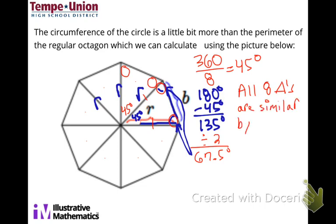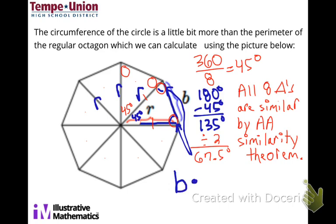The triangles are similar by the AA similarity theorem — two matching angles are enough to establish similarity. Because all eight triangles are similar, we can compare their side lengths. The side b can be compared to the radius r, and this relationship holds regardless of the size of the octagon — it does not depend on the size of the octagon.